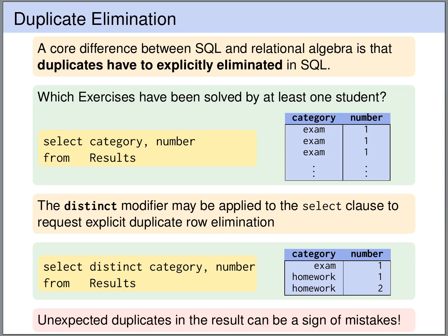However, if you formulate an SQL query and you unexpectedly get duplicate rows in the result, you should take this seriously. You should not simply add a DISTINCT modifier to eliminate them. Unexpected duplicate rows are often a sign of a mistake — for instance, a missing join condition. So you should investigate and understand why you get these duplicates.